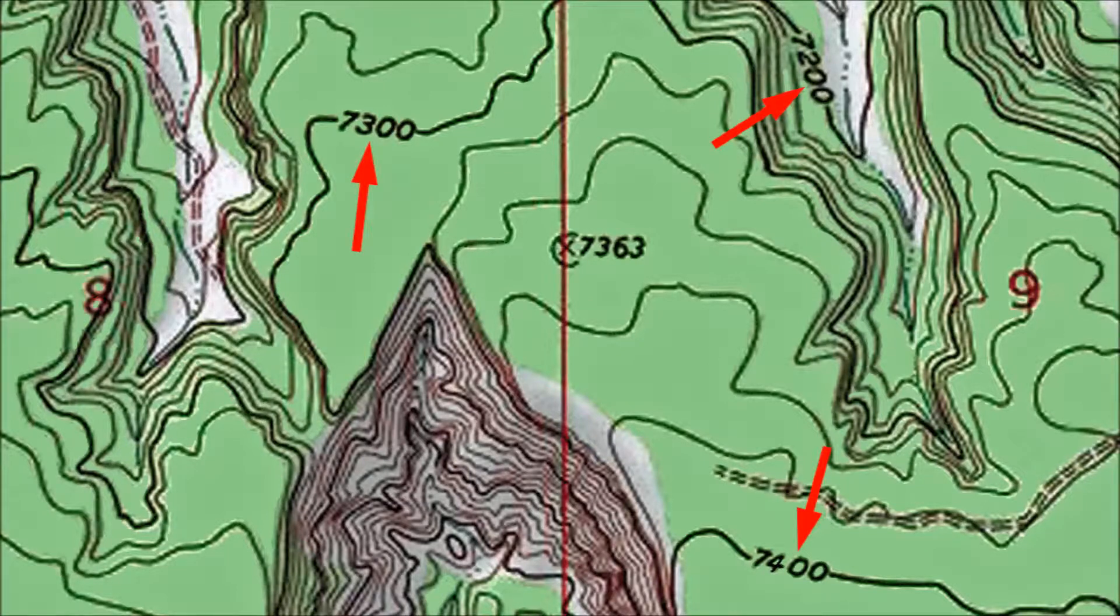On standard US topographic maps every fifth contour line is thicker and if there's room it has an elevation value. Those lines are called index contour lines. Here are three examples. The thinner contour lines between them with no elevation values are intermediate contour lines.